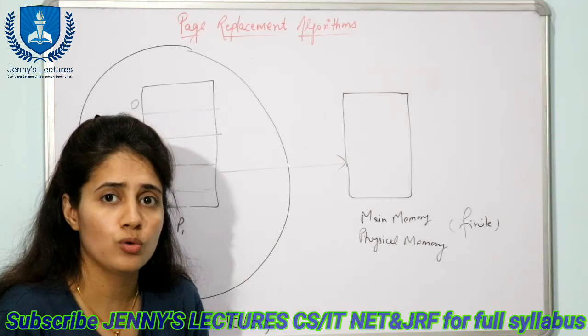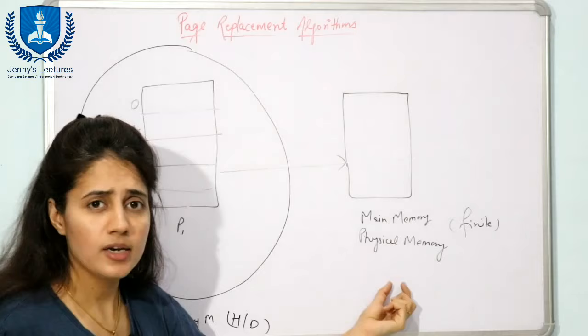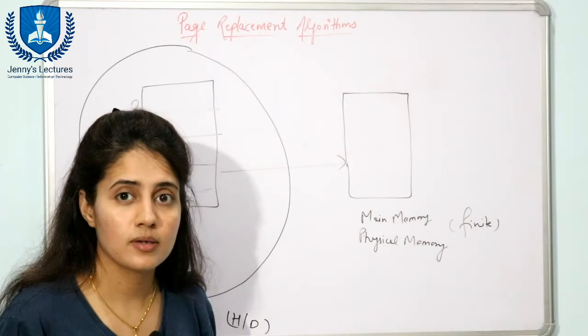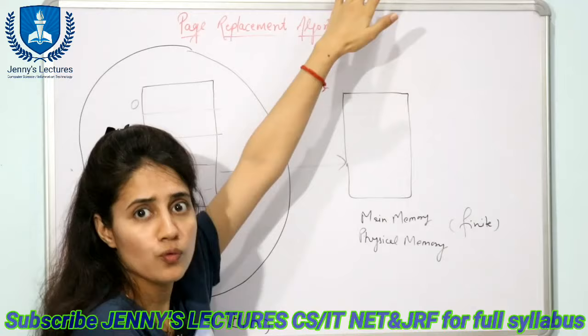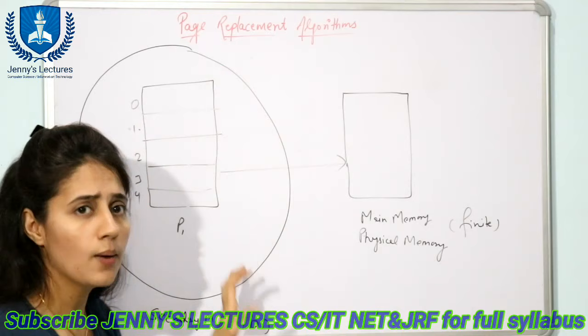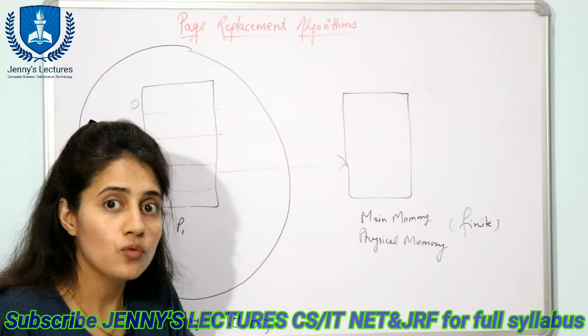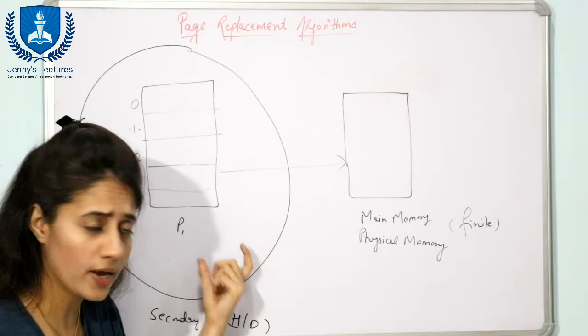When you apply this concept, many processes can be in main memory at the same time, so it seems that the size of main memory is very large — but actually that is not true. That illusion is known as virtual memory. Virtually it seems the size of main memory is very large because we are not loading the complete process, just the required pages. Actually, virtual memory refers to a portion of the hard disk used for this purpose.